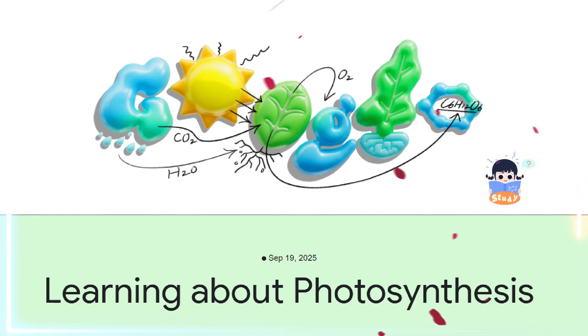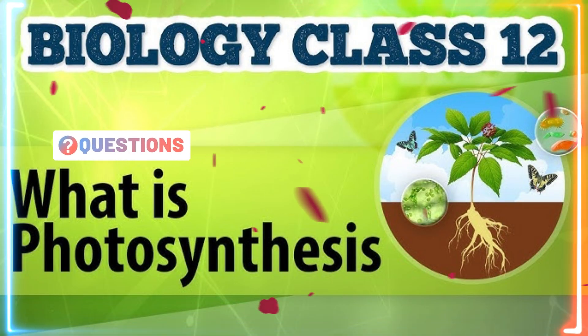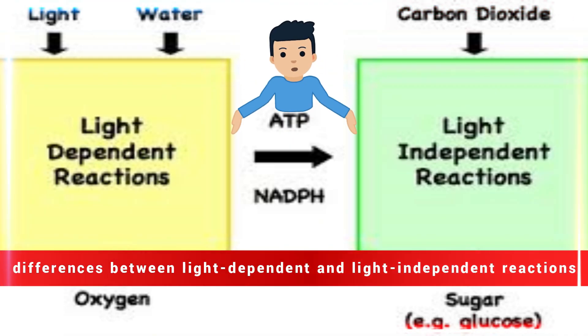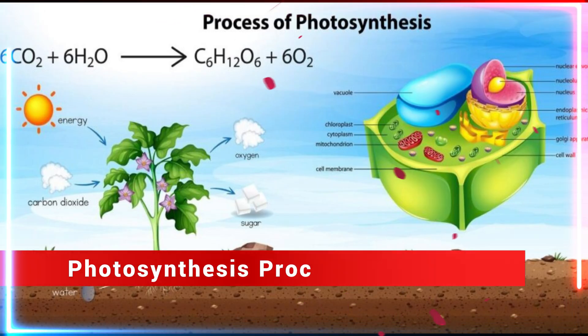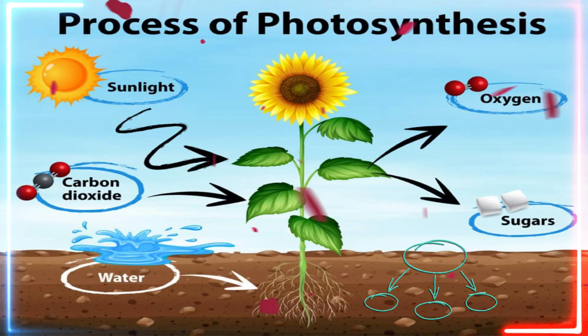Learning about photosynthesis raises questions in school like, we're on the photosynthesis chapter in biology class and I don't get the differences between light-dependent and light-independent reactions. Can you help break it down for me? I need to understand the whole process for both in plant cells.